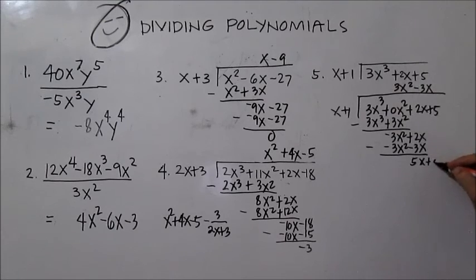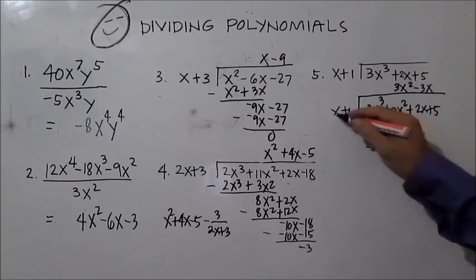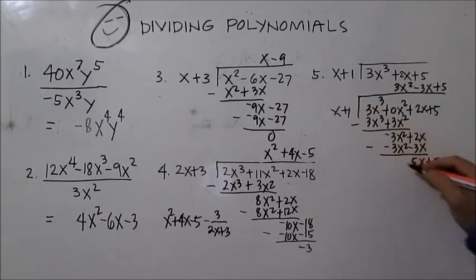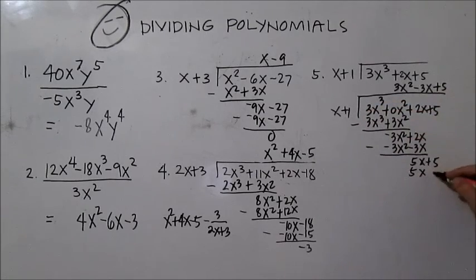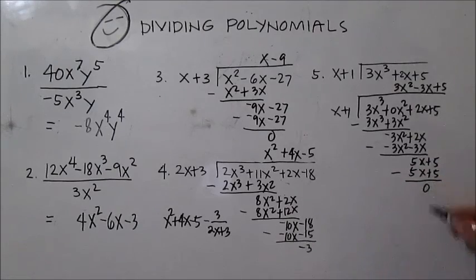Divide the first terms: 5x divided by x is 5. Multiply: 5 times x is 5x, and 5 times 1 is 5, giving 5x plus 5. Subtract: 5x plus 5 minus 5x plus 5 is 0.